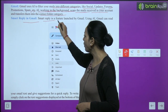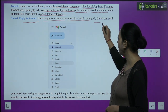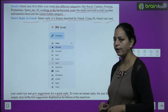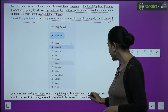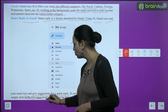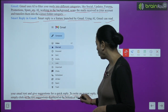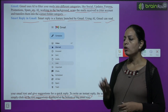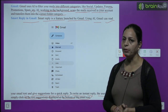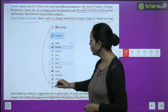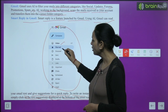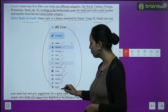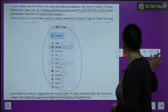Smart Reply in Gmail. Smart Reply is a feature launched by Gmail using AI. Gmail can read your email text and give suggestions for a quick reply. To write an instant reply, the user has to simply click on the text suggestions displayed at the bottom of the email. Gmail has many sections like inbox, starred, sent, drafts, spam, trash and so on.